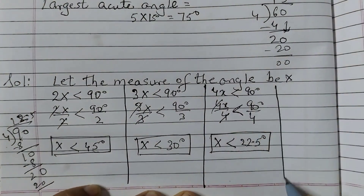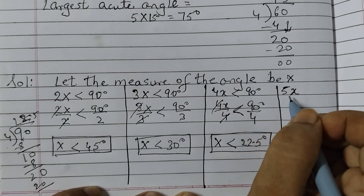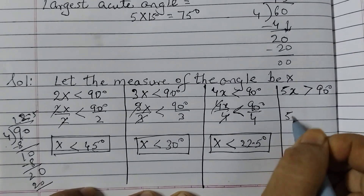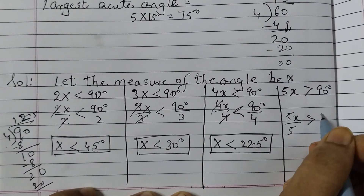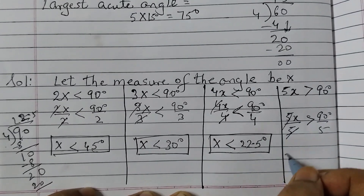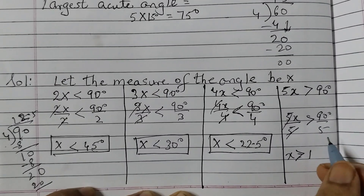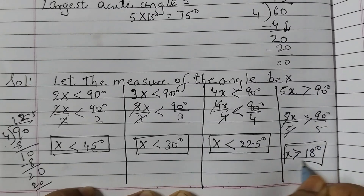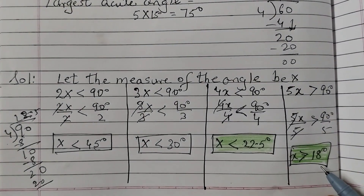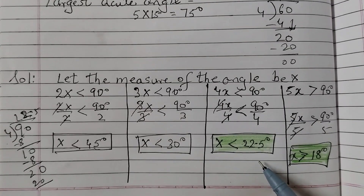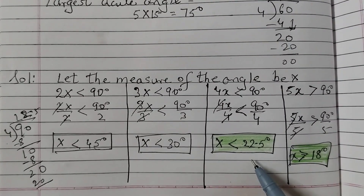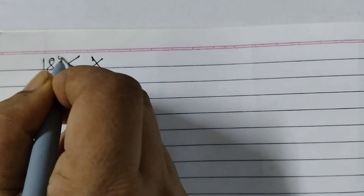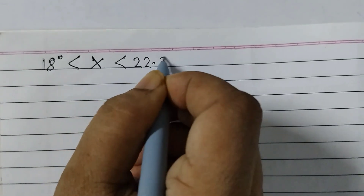The last condition: multiplying by 5 gives an obtuse angle, so 5x > 90 degrees. Dividing both sides by 5, x > 18 degrees. Therefore, the angle must be greater than 18 degrees and less than 22.5 degrees. Any angle between 18 degrees and 22.5 degrees is a valid answer.